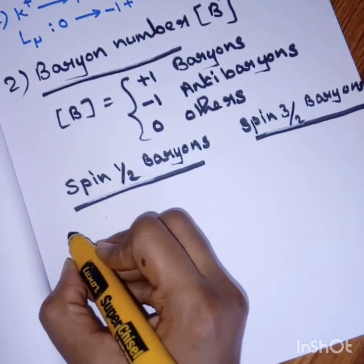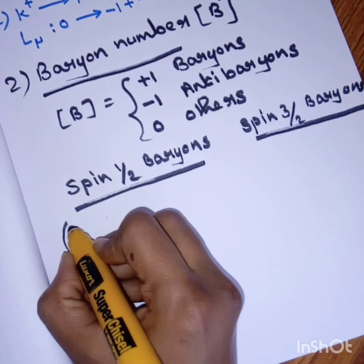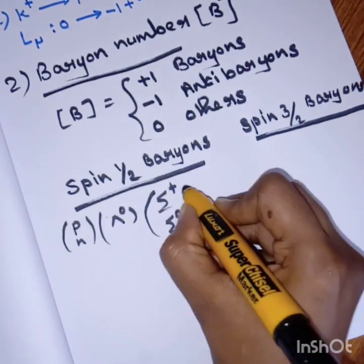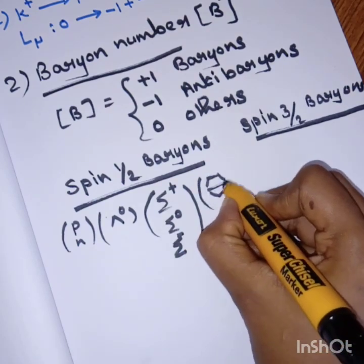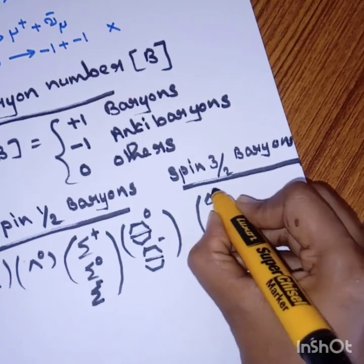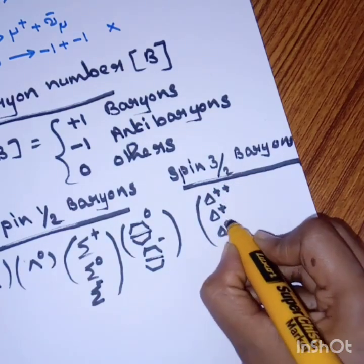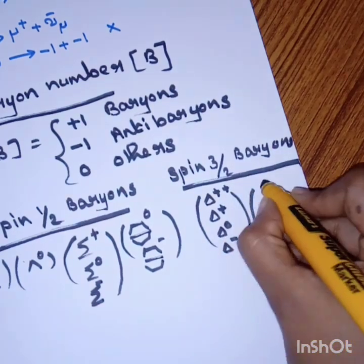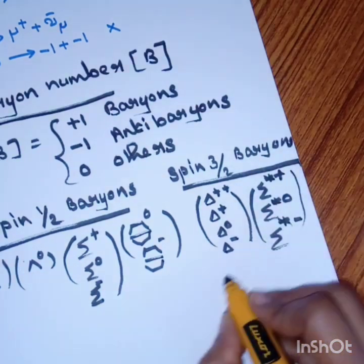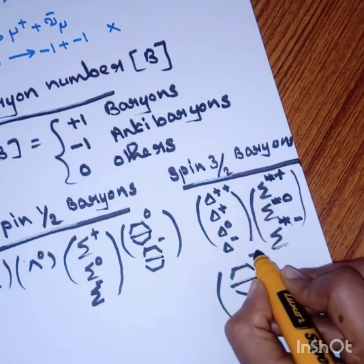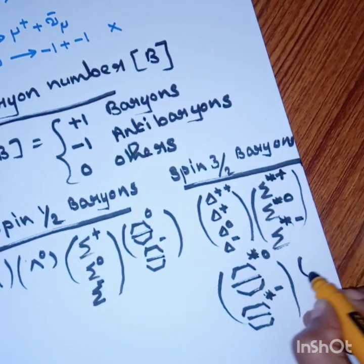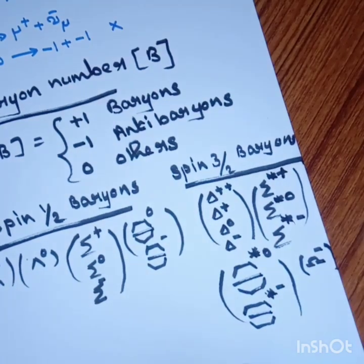Let's write all the particles in each group so you remember them. In the spin-half group: proton, neutron, lambda-0, sigma-plus, sigma-0, sigma-minus, cascade-0, cascade-minus. In the spin-3/2 group: delta-plus-plus, delta-plus, delta-0, delta-minus, sigma-star-plus, sigma-star-0, sigma-star-minus, cascade-star-0, cascade-star-minus, and last, omega-minus. These particles all have baryon number 1.